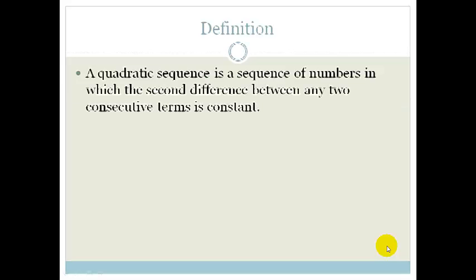Let's look at the definition. A quadratic sequence is a sequence of numbers in which the second difference between any two consecutive terms is constant.